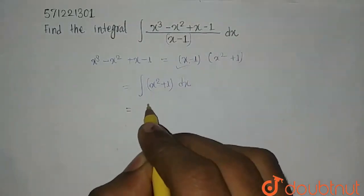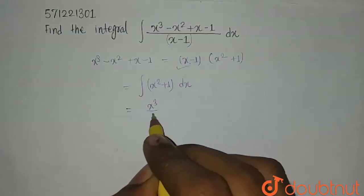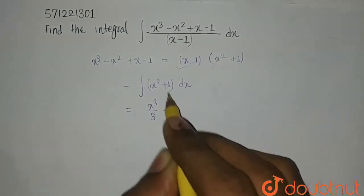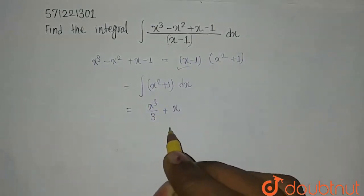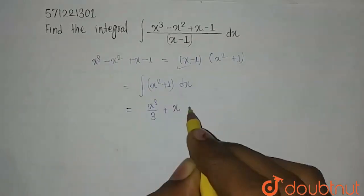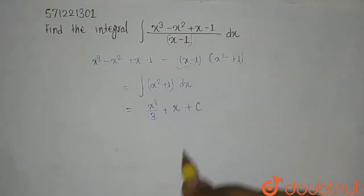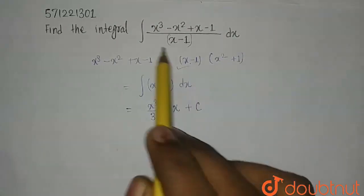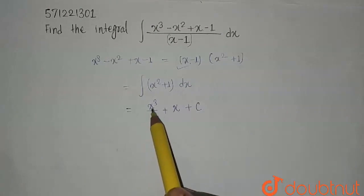So integration of x² is equal to x³ divided by 3, plus integration of 1 is going to be x. And since it is indefinite integral, therefore the constant c will come. Therefore the integration of this is going to be x³/3 + x + c.